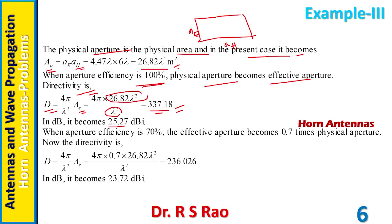When aperture efficiency is 70%, effective aperture becomes 0.7 times physical aperture, which is 0.7 times 26.82 lambda-squared. Directivity then becomes 4 pi over lambda-squared times that effective aperture, giving d equals 236.026, or 23.72 dB. Notice that aperture efficiency has a direct bearing on directivity — if efficiency is more, directivity is also more; hence aperture efficiency is an important factor.